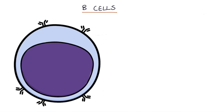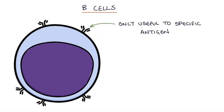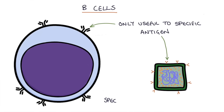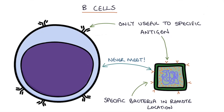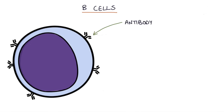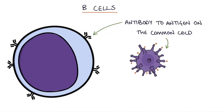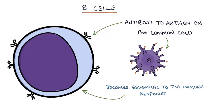For example, if you choose one B cell at random from within a lymph node, it may have antibodies that are only useful to a very specific antigen found on a specific bacteria that only exists in some remote part of the world, so that specific B cell will never encounter that antigen and will never contribute to the immune response. Alternatively, you might choose a B cell with an antibody specific to an antigen on a virus that causes the common cold, and when the person picks up that specific virus, the B cell multiplies furiously and becomes essential to fighting off that infection and protecting against that virus in the future.